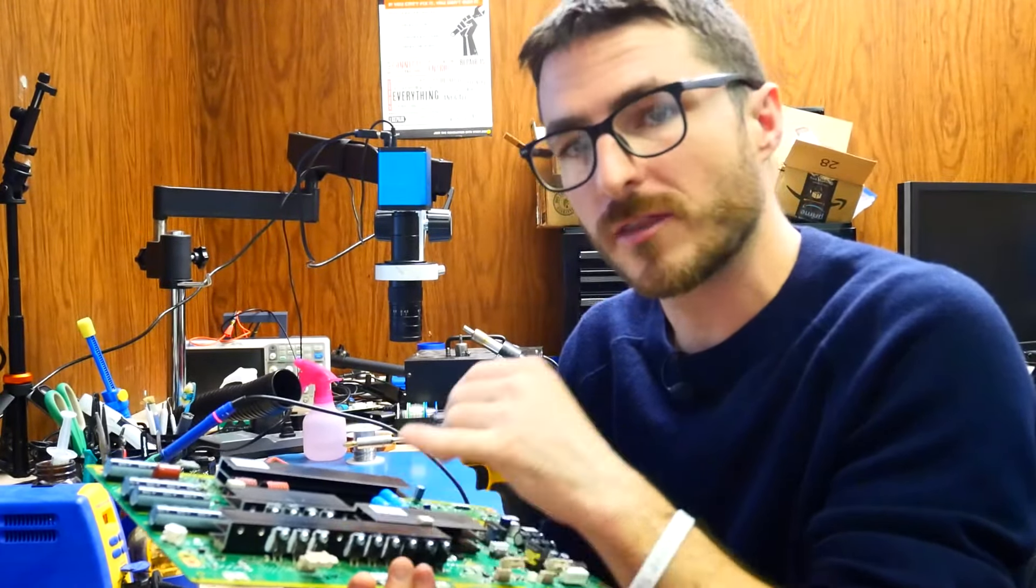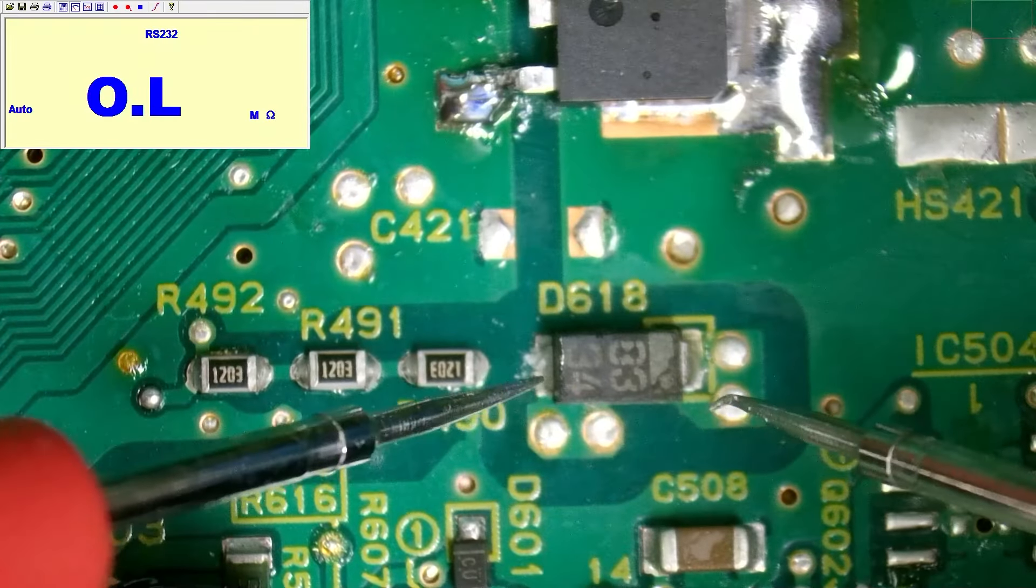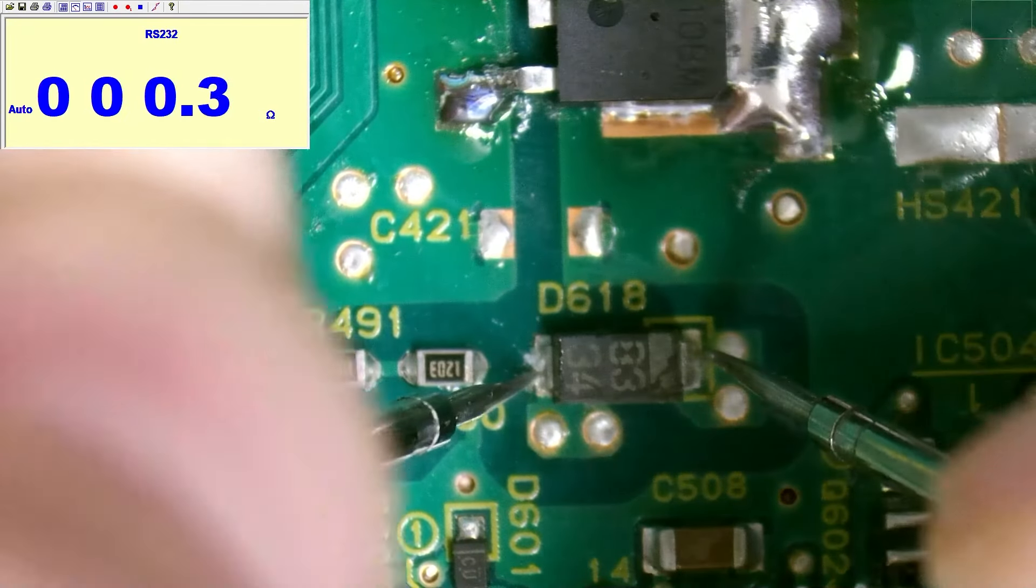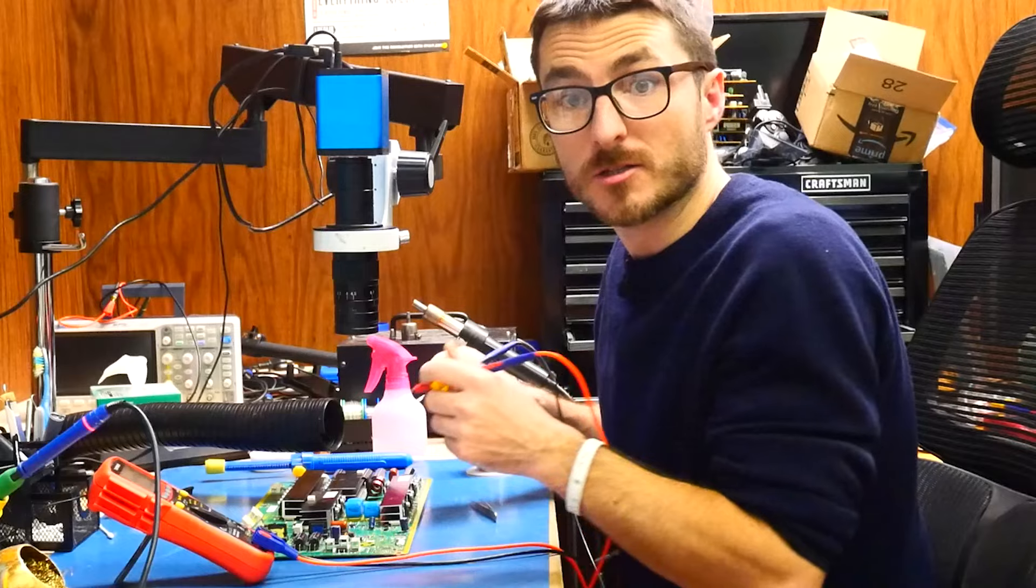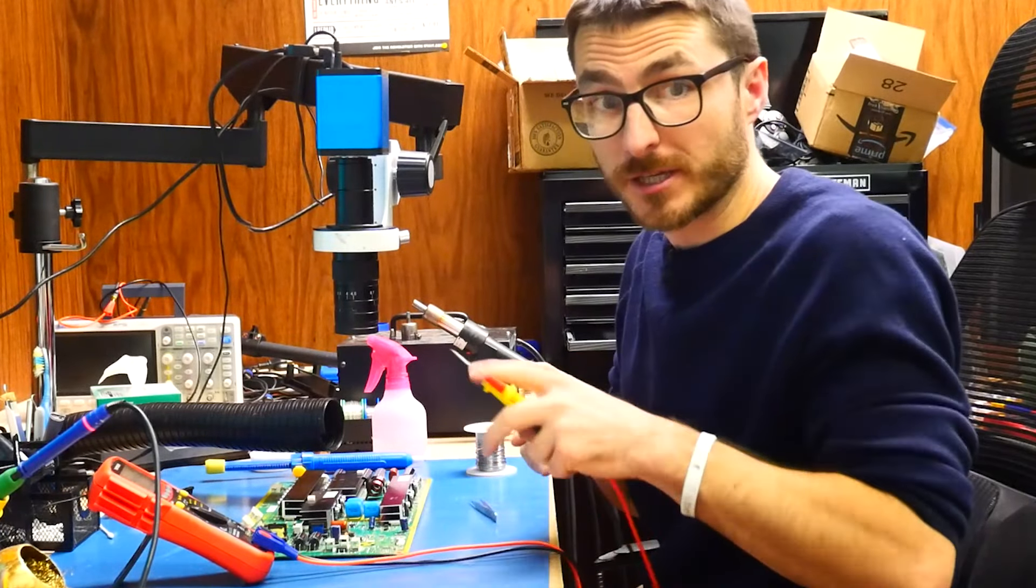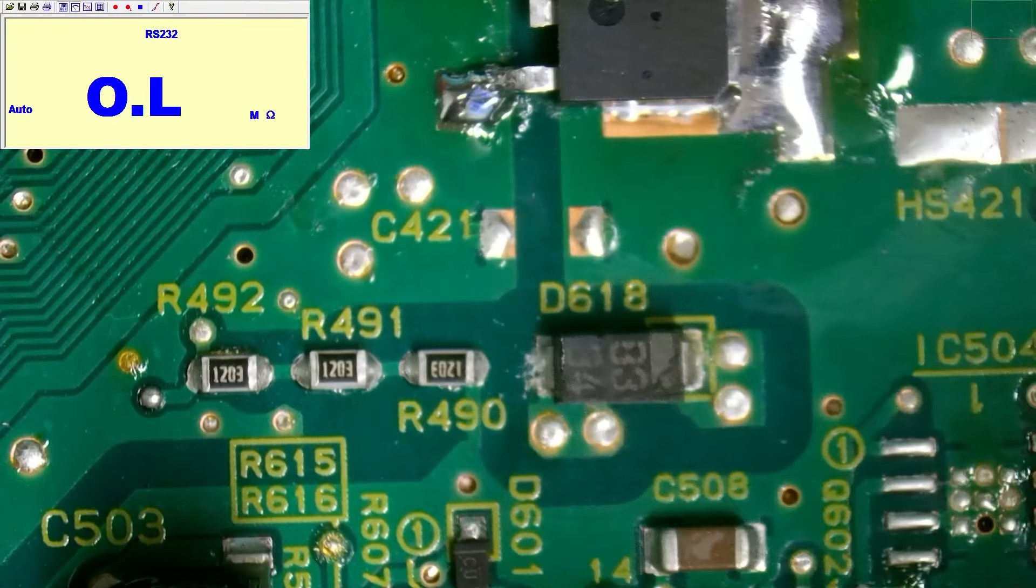So I was actually doing some final checks, and I did find one more shorted component, which is this diode over here, and it's labeled D618, and we are getting a dead short, 0.3 ohms. So we are going to have to replace it, and I believe after that we're all done. I did check the rest of the board. I did not find anything else wrong with the board, so this should be it.